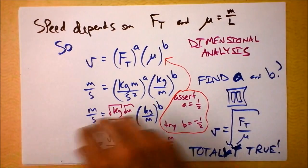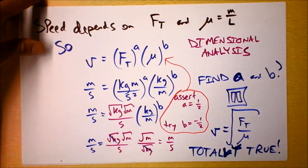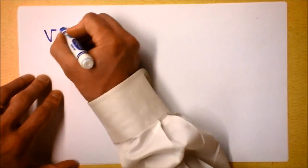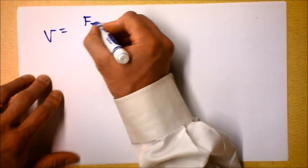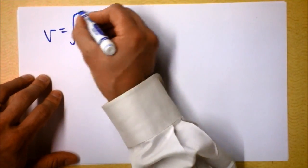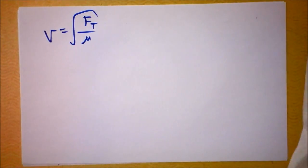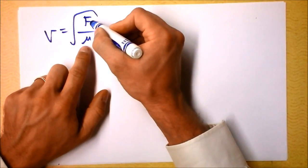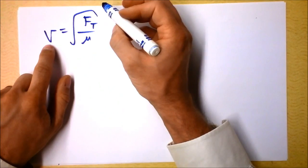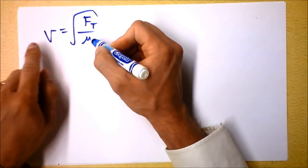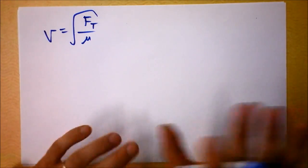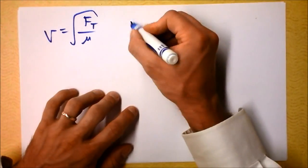Before I abandon this, I want to think about this equation a little longer. Speed is the square root of the tension force divided by mu. The tighter you pull the rope the faster the wave goes, and the more massive the rope is the slower the wave goes. That makes sense.